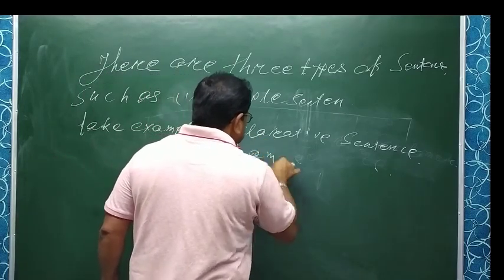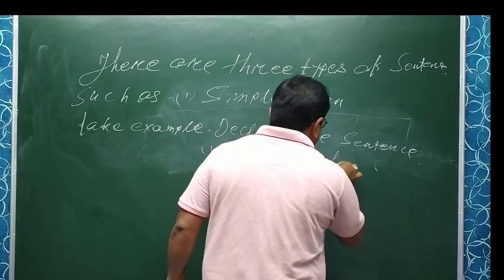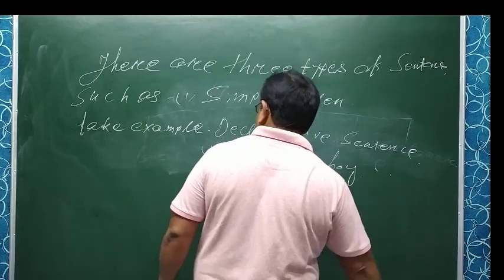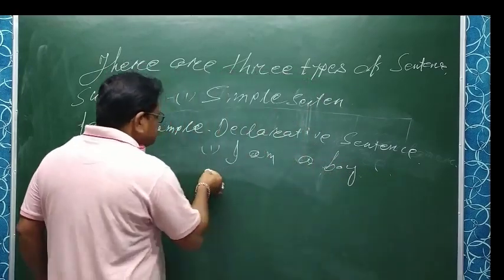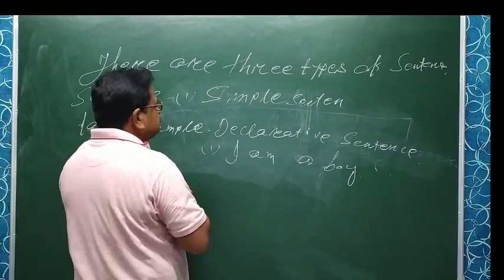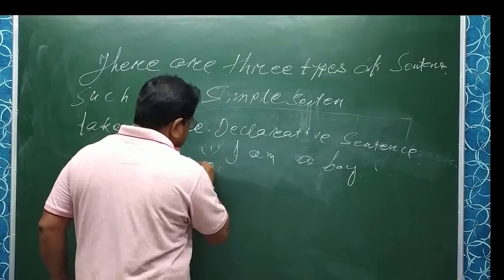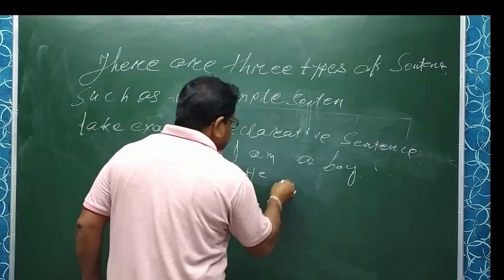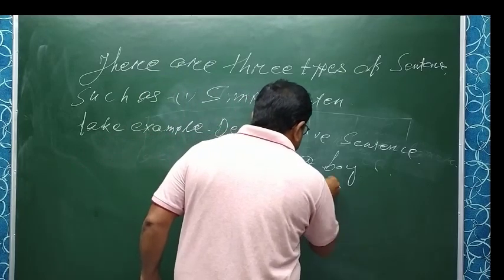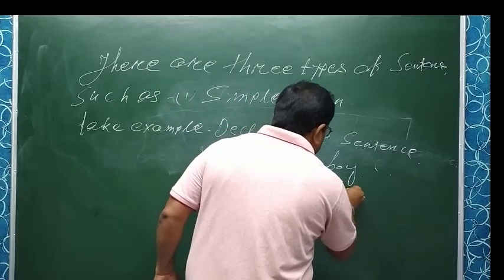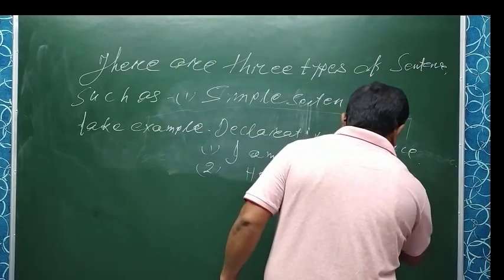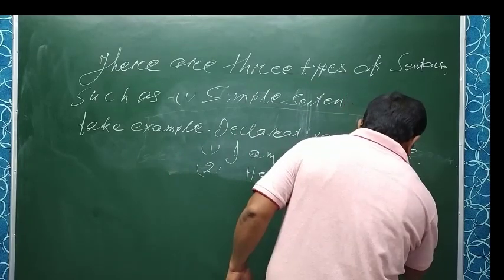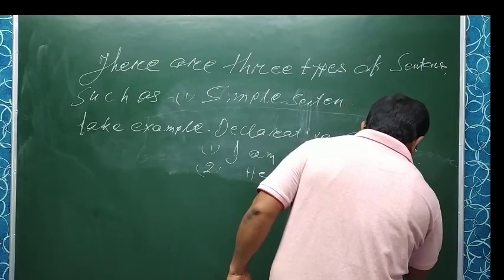Examples of declarative sentences: 'I am a boy.' 'He goes to school every day.'